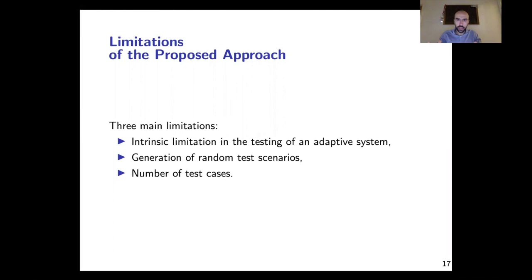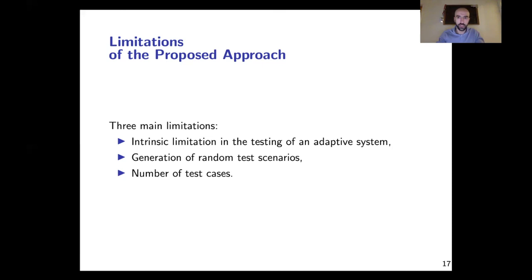I want to conclude this presentation by discussing the limitations of the proposed approach. In the paper we identified three limitations. The first is intrinsic in the testing of self-adaptive systems: on one side, we don't really want to define the uncertainty affecting the system because we want to leave it open for the adaptation to adapt to it; if we rigorously define it, we don't need adaptation anymore because we know what to expect and how to react. On the other side, if we want to test such a system, we want to define test cases, so we need to define what is the possible uncertainty that will affect the system. The second limitation is the generation of random test scenarios — it is very difficult to generate randomly sampled uncertainty that is representative of the real system in an unbiased way.